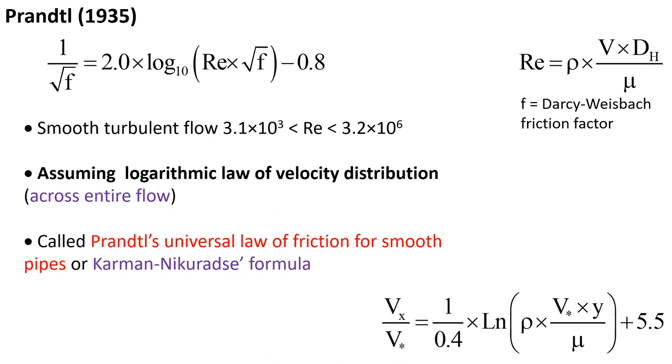An important development, sometimes called Prandtl's universal law of friction for smooth pipes, is this relationship linking the Darcy friction factor f to the Reynolds number across a broader range of smooth turbulent flow up to 3.2×10^6. This development was obtained assuming a logarithmic law of velocity distribution across the entire cross-section. This is also called the Karman-Nikuradse formula.